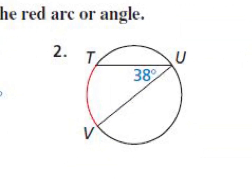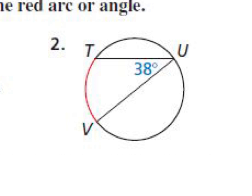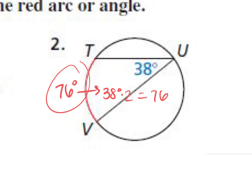Example two: we're looking for the red arc instead of the angle. Daniel says 76. Why? You take 38 degrees, the measure of the inscribed angle, and multiply it by two to get 76. So: if you need to find the arc, multiply the angle by two; if you need to find the angle, divide the arc by two.